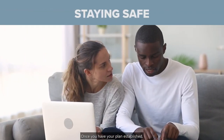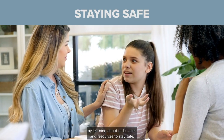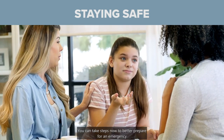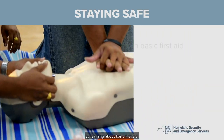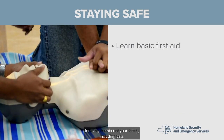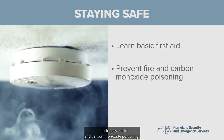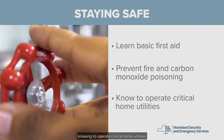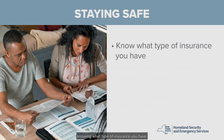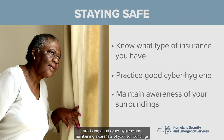Once you have your plan established, the next step is to prepare your home and your family by learning about techniques and resources to stay safe. You can take steps now to better prepare for an emergency by learning about basic first aid, having a first aid kit and emergency supplies for every member of your family including pets, acting to prevent fire and carbon monoxide poisoning, knowing how to operate critical home utilities, knowing what type of insurance you have, practicing good cyber hygiene, and maintaining awareness of your surroundings.